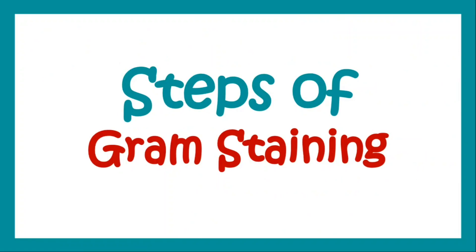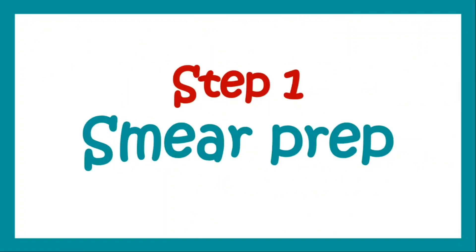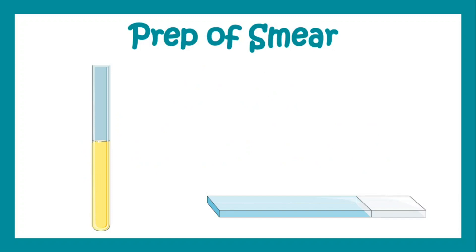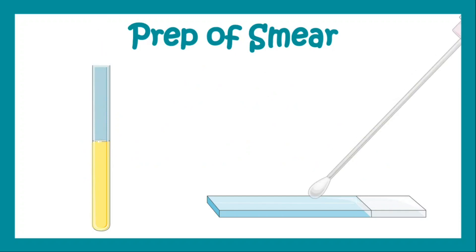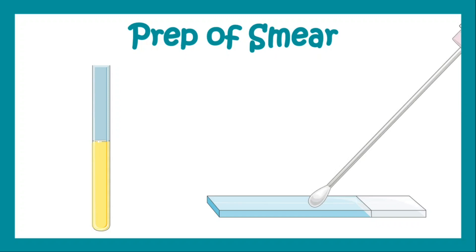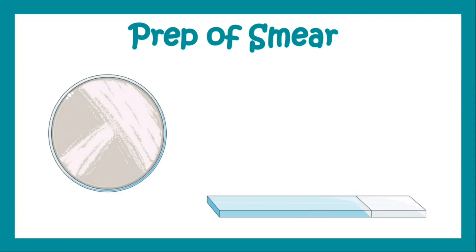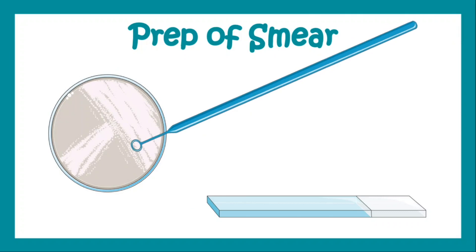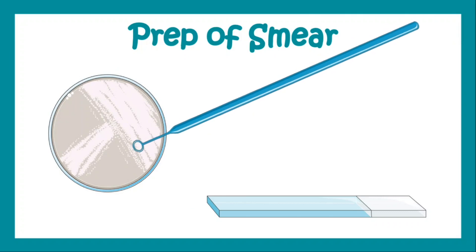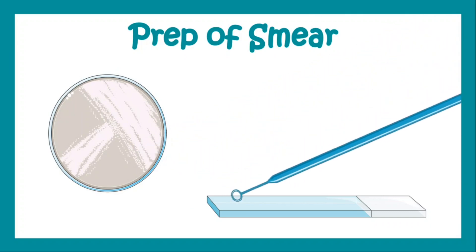Now let us learn the steps of gram staining. Step one is smear preparation. We take the sample of bacteria and prepare a smear on a clean grease-free glass slide. Or we can take the sample from a culture plate and with a wire loop we can create the smear.